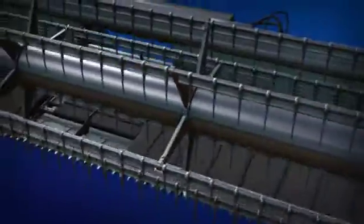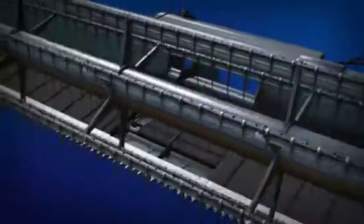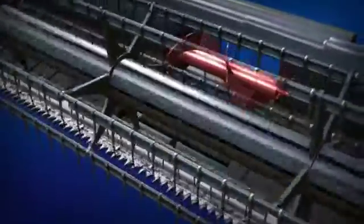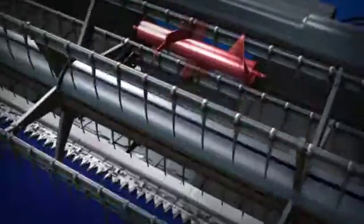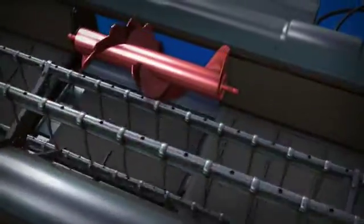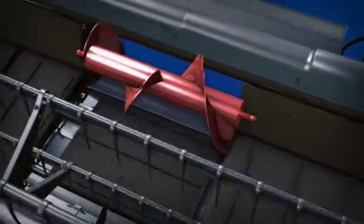The center feed auger is critical in feeding the crop smoothly and evenly from the center draper to the combine feeder house. The forward auger position over the draper provides positive feeding in fluffy and high-yielding crops.